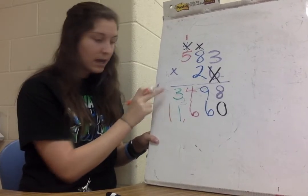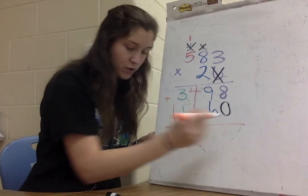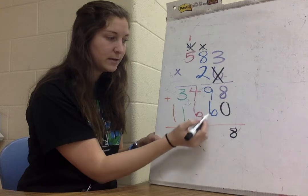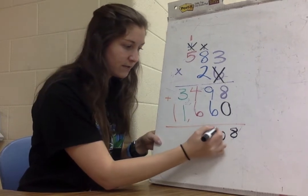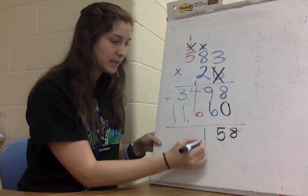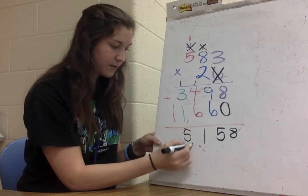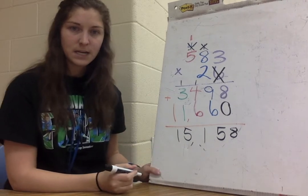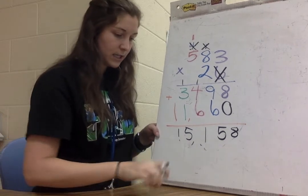Now I have my two partial products: 3,498 and 11,660. Adding them up: 8 plus 0 is 8, 9 plus 6 is 15 — 5 down carry 1, 4 plus 6 plus 1 is 11 — 1 down carry 1, 3 plus 1 plus 1 is 5, 1 plus nothing is 1. So my answer is 15,158.